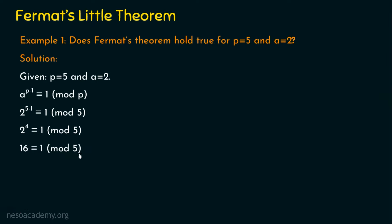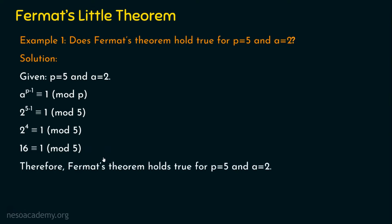We know how to solve this. When sixteen is divided by five, five goes three times to give fifteen, and the remainder is one. So we can conclude that Fermat's Theorem holds true for p equal to five and a equal to two.